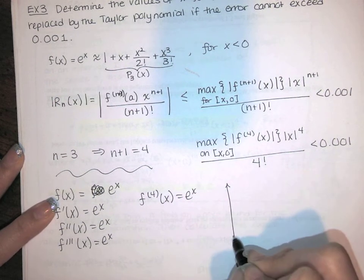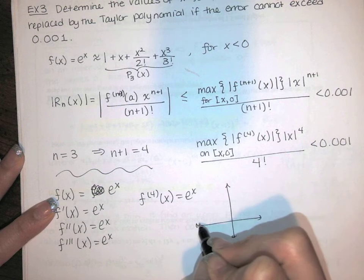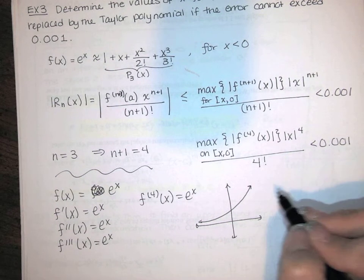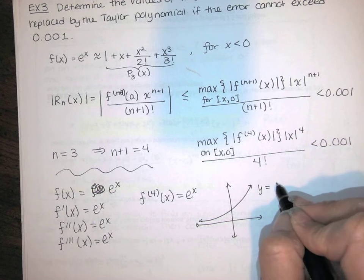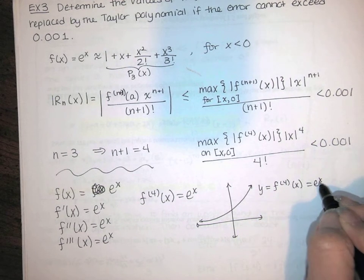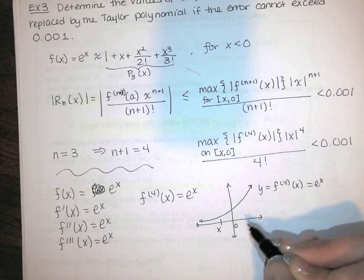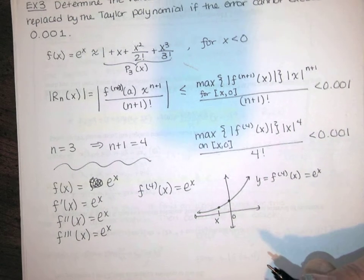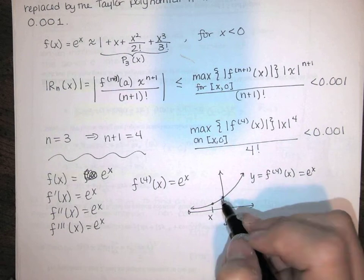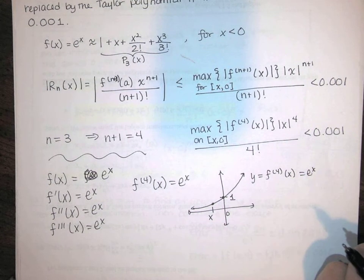So we're told that x is negative. We want to maximize this function, y equals e to the x. On the interval from x to 0, I think we can all see just from the shape of e to the x that the maximum value of the function occurs at 0 and that maximum value is 1.